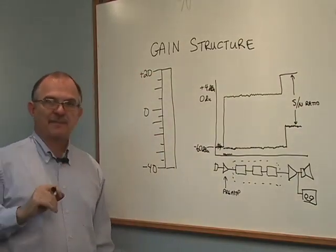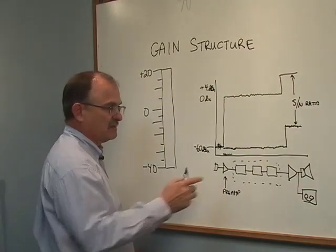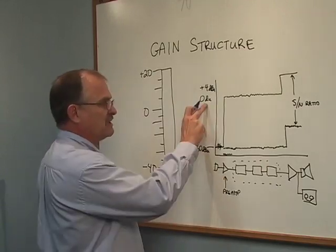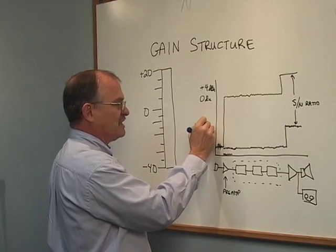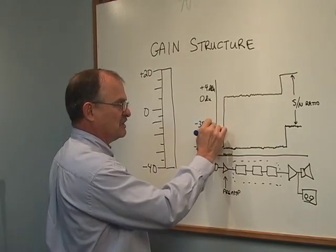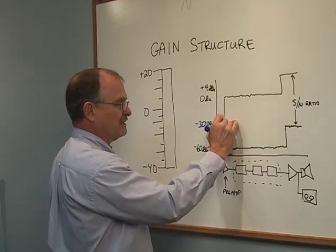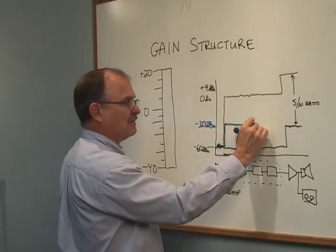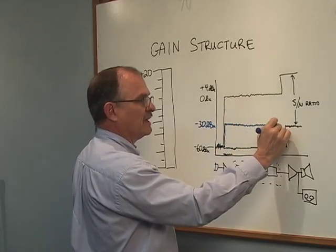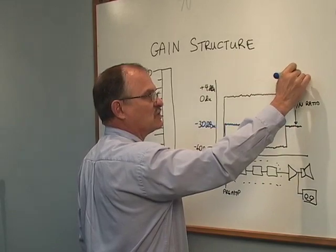So what happens in a system where you decide to not amplify the preamp very much? Instead of taking it up to 0 dBU, you only take it up to minus 30. You only give it 30 decibels of amplification. So your signal is here. It comes up to this point. That's all you amplify it to.